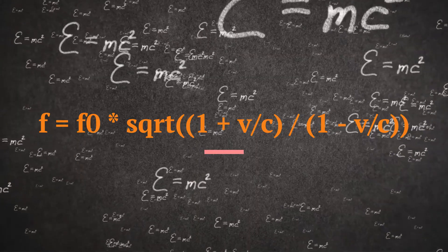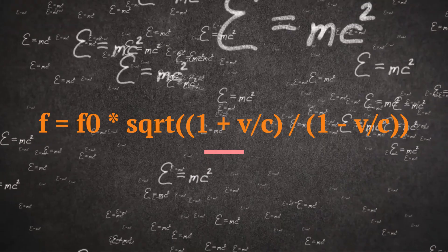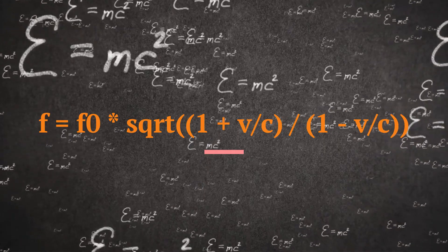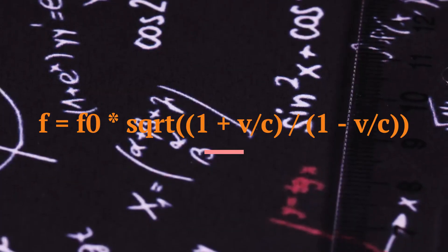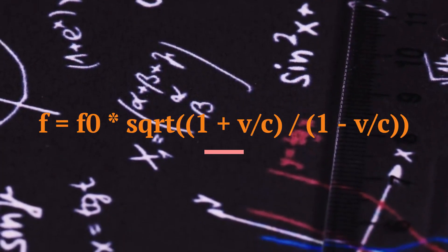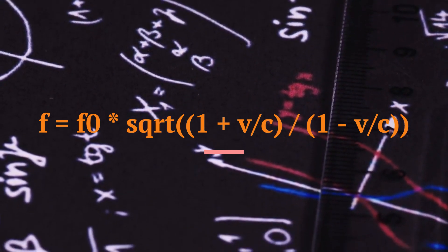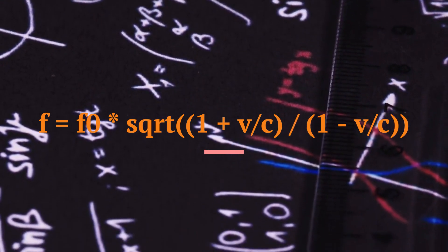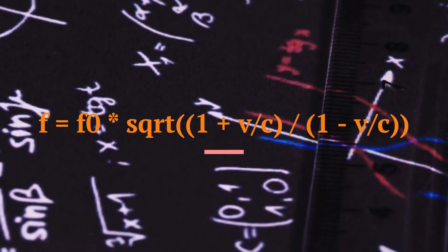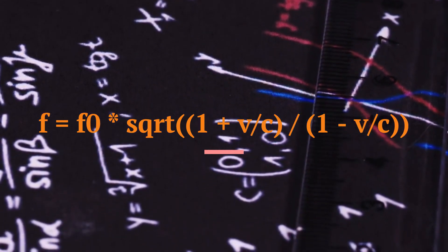As you can see, as v approaches c, f becomes very large, meaning that the light becomes very blue. In fact, if v equals c, f becomes infinite, meaning that the light becomes invisible to us.